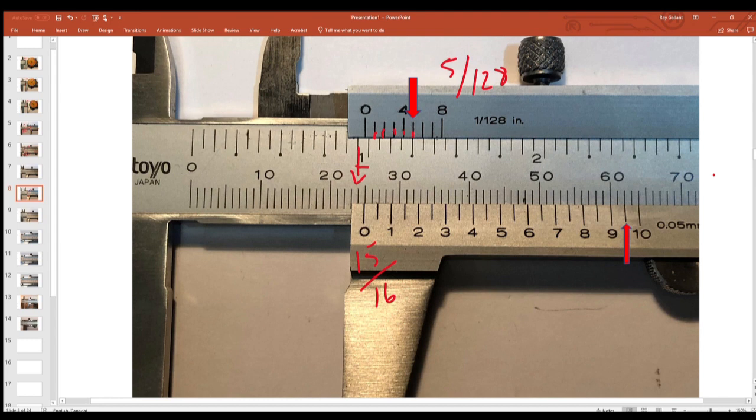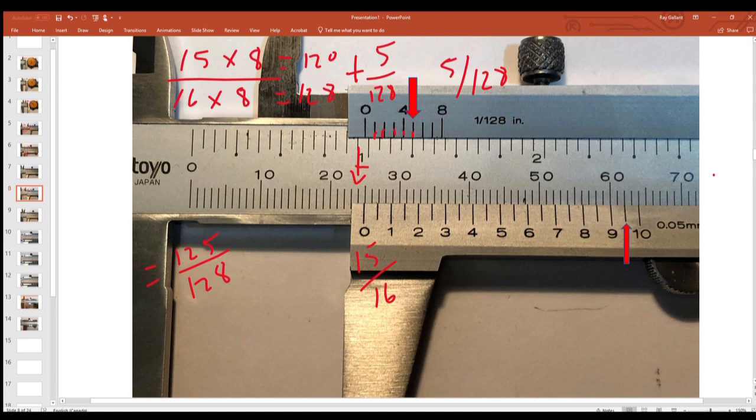Calculator. So 15 times 8, 16 times 8 equals 128, equals 120 plus 5/128ths equals 125/128ths, and you divide 25 by 28 equals 0.97656. Not bad.